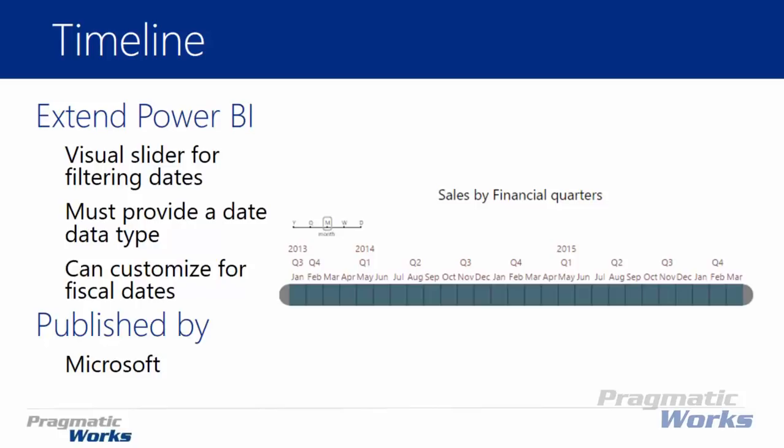That does mean that you must provide a date value. Any value you want to filter must have the data type of a date. If you provide something like a year or a month name, those things will not be able to filter using a timeline. You might be best suited to use a typical slicer if you want to filter by one of those types of items.